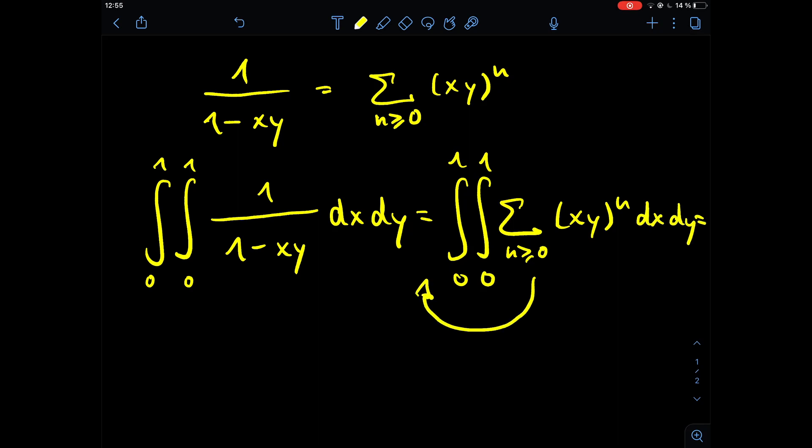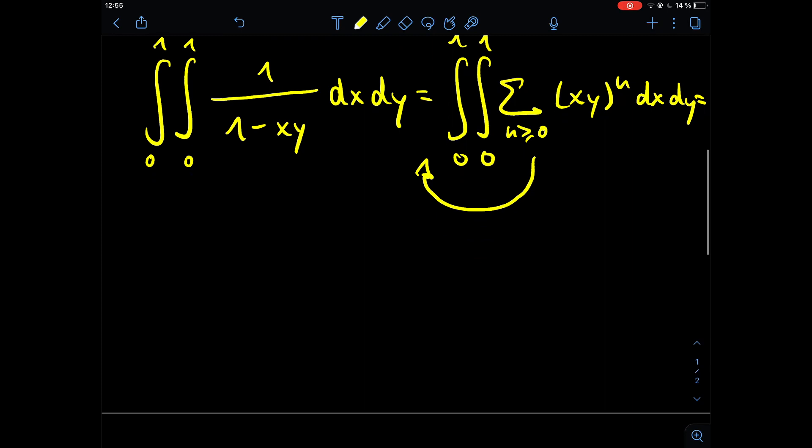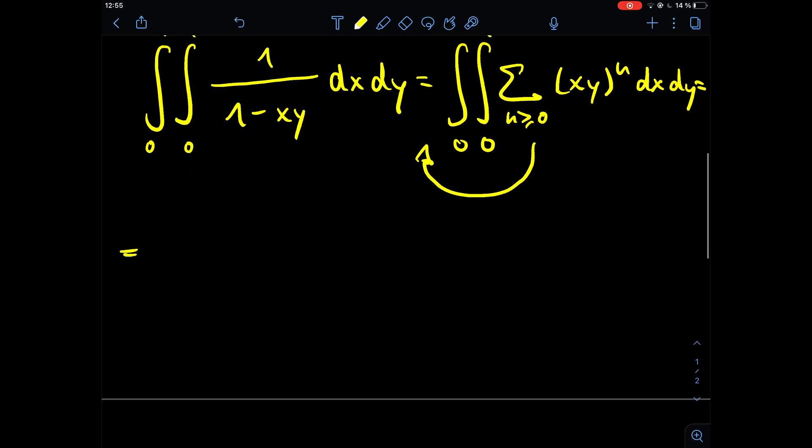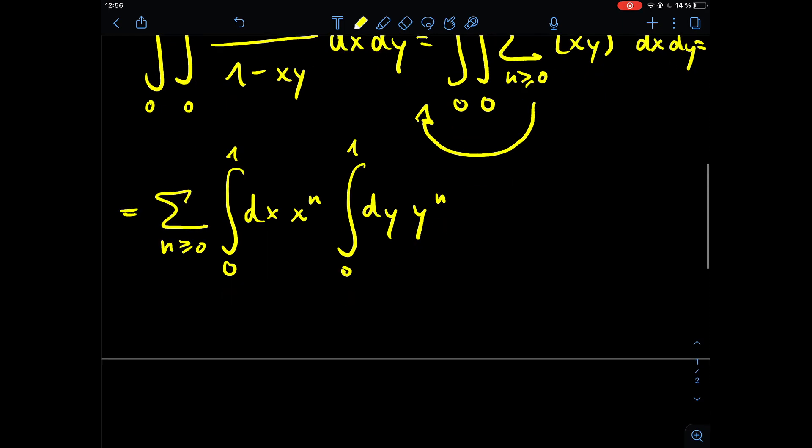Now we can extract the sum out of the integral, so this gives us the sum outside of the integral, and then the integral from 0 to 1 over dx x to the power of n, and the integral from 0 to 1 dy y to the power of n.